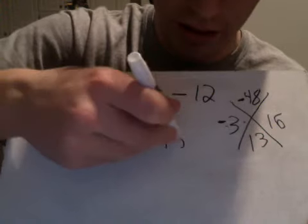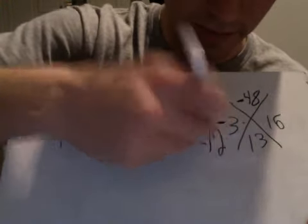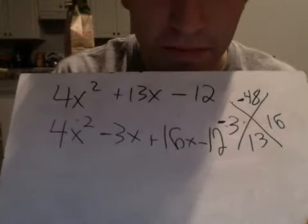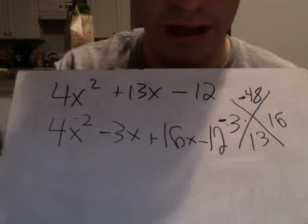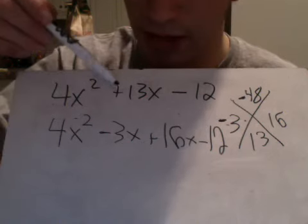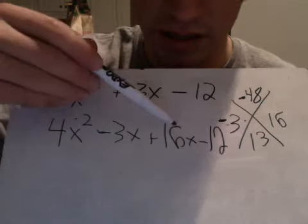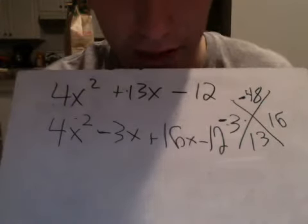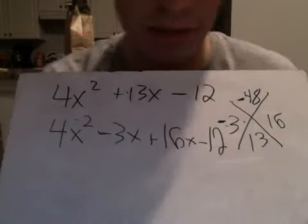So this is kind of how I change forms for this one. If you notice, these two lines are the same thing. The only thing I changed was that I made 13x into negative 3x plus 16x. So the same thing. I still have the minus 12 just like the top line also.